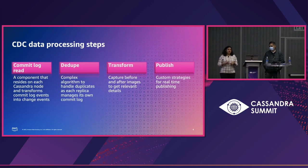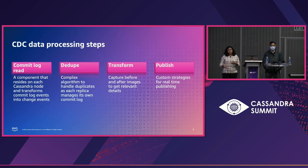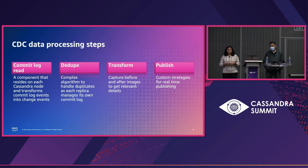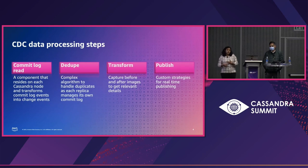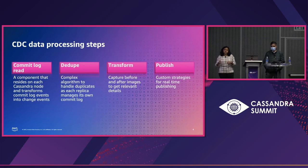To solve for any CDC needs, any organization would have to perform four steps. First, they would read data from the commit log — installing some component on each node to get the data out and convert it into change data events. Second, since Cassandra relies on replication factor to replicate data across multiple nodes, the data is duplicated, so organizations would have to write complex algorithms to dedupe the data and get a single copy of every change.